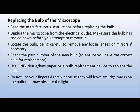Locate the bulb. Carefully remove any loose lenses or mirrors if necessary. Avoid damage to other parts. Check the part number of the new bulb to ensure you have the correct replacement. Use only tissue, lens paper, or a bulb replacement device to handle the bulb. Do not use your fingers directly because they will leave smudge marks that may obscure the light. After replacing, reconnect the power supply and check if it is fixed. Keep the microscope on for 5 to 10 minutes under observation. If bulb flickering or other problems occur, immediately switch off and allow the microscope to cool. If there is no problem, contact the manufacturer and supplier for further assistance.